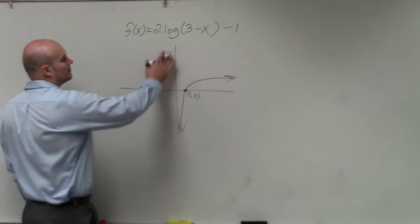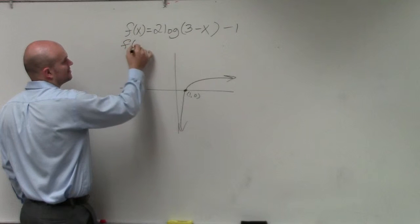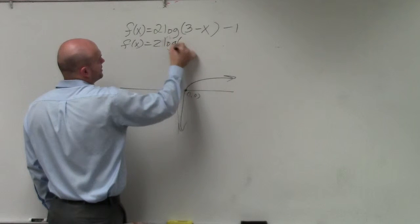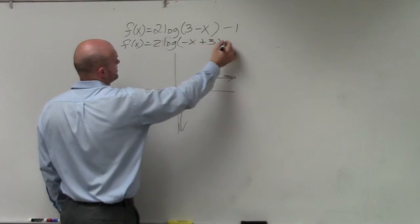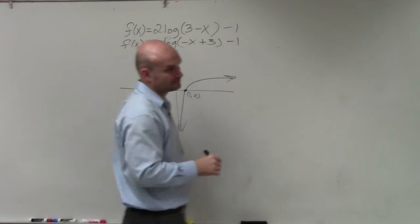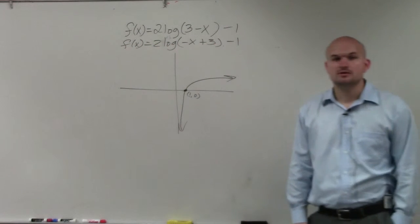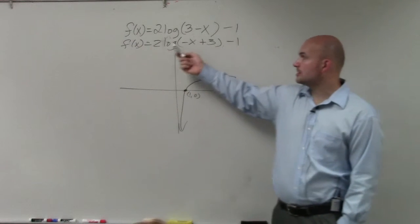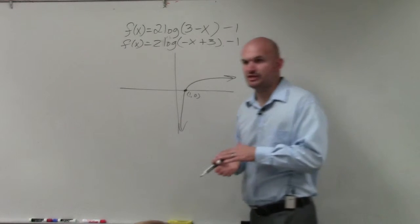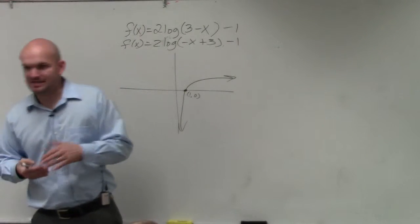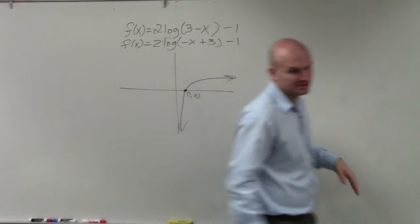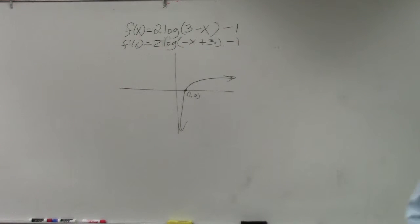The next thing — what I typically prefer to do is to rewrite this as log of negative x plus 3 minus 1. So now what you guys can see is my graph has been transformed. Remember, A is just going to be your vertical stretching and compressing of the graph. That's not going to affect the intercept, but it's going to stretch the graph.